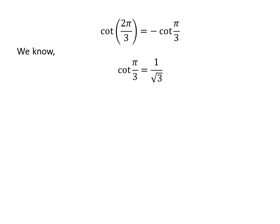We know cotangent of pi upon 3 is equal to 1 upon square root of 3. So cotangent of 2 times pi upon 3 is equal to minus 1 upon square root of 3.